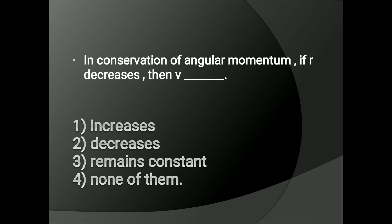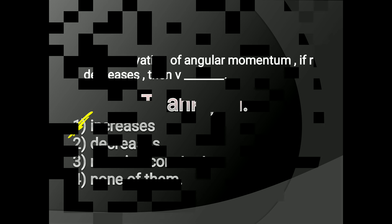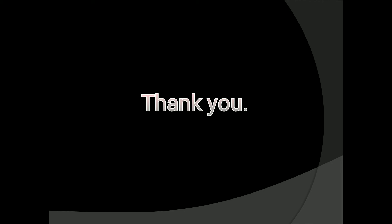Fourth and last question: in conservation of angular momentum, if R decreases, then V does what? This question comes from the ice skating example. If R decreases, then V must increase, because radius and velocity are inversely proportional to each other. As one term increases, the second term decreases, so if R decreases, then V increases.